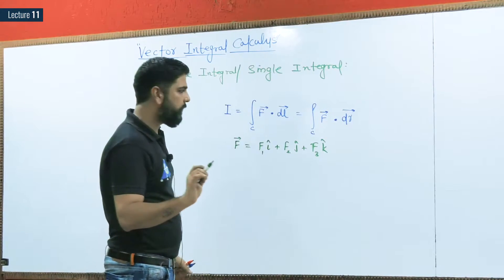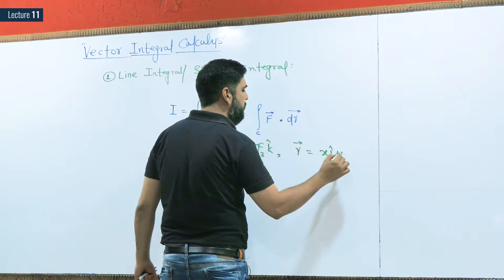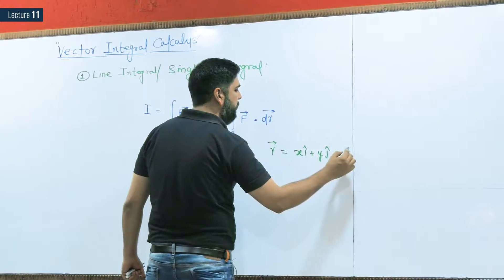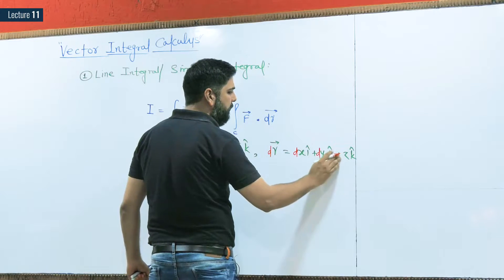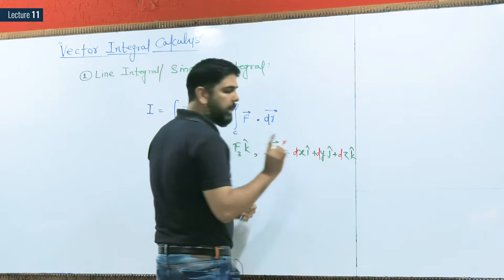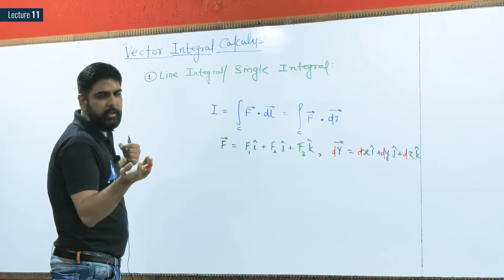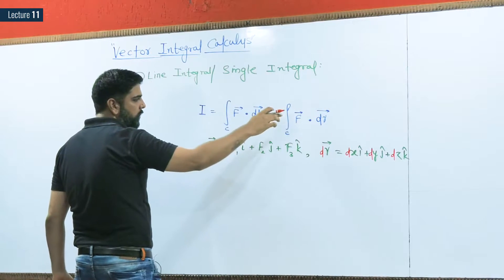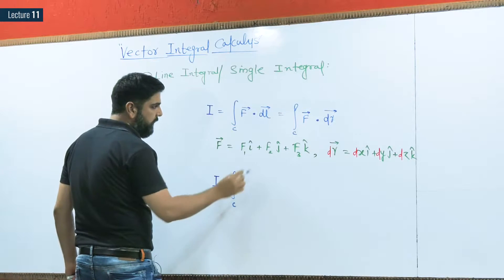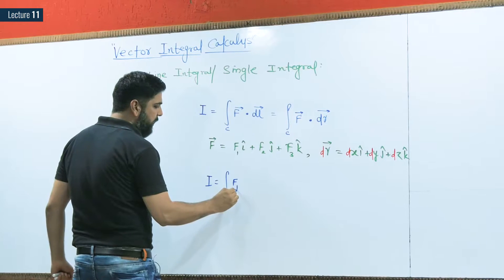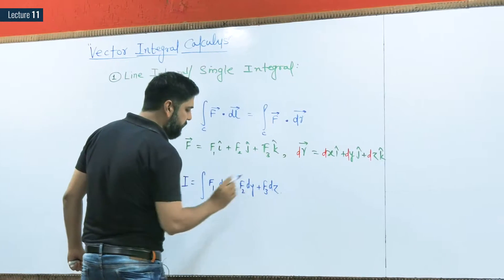Here F₁, F₂, F₃ are functions of x, y, and z, or they can be constants. The position vector r = xî + yĵ + zk̂, so dr = dxî + dyĵ + dzk̂. Expanding the dot product F·dr gives: I = ∫(F₁dx + F₂dy + F₃dz).